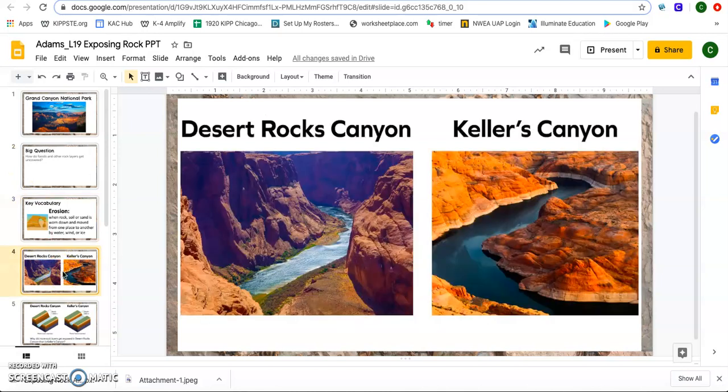Now, let's think about these same two images from yesterday. You got the Desert Rocks Canyon and you have the Keller's Canyon. We have both canyons. Yesterday, we talked about similarities and differences in both of these canyons. We talked about us seeing in both canyons that there are rock layers. And then we also noticed that there's something different. The Desert Rocks Canyon is actually deeper than the Keller's Canyon.